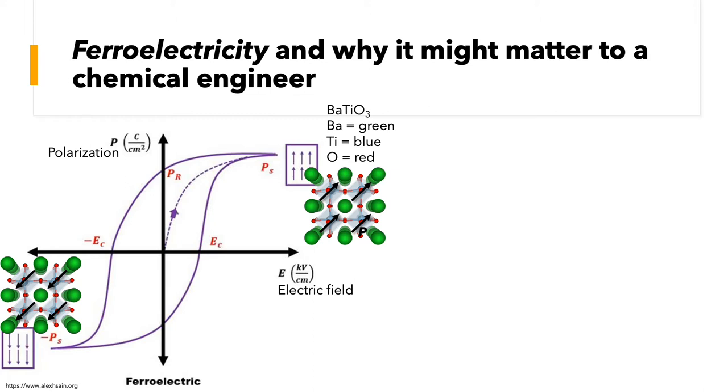Upon field reversal, the polarization continues to decrease until we reach the coercive field, E sub c, where the polarization flips, and now the titanium B-site cations are displaced along the opposite direction. In this case I've shown the titanium B-site cations polarized along the minus 1, minus 1, minus 1 direction.